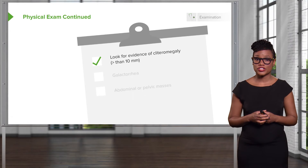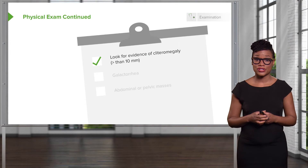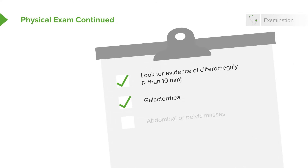Let's now go over a checklist. If you see evidence of clitoromegaly, you should think that this patient has androgen excess. If she has galactorrhea, you would expect elevated prolactin — and that's correct. Sometimes you can also see abdominal or pelvic masses that can actually secrete androgens, which lead to hirsutism.